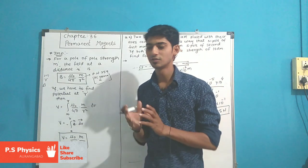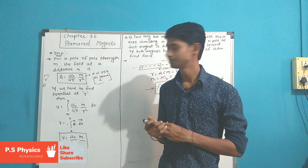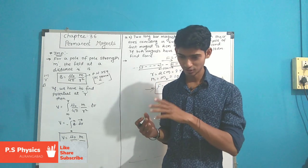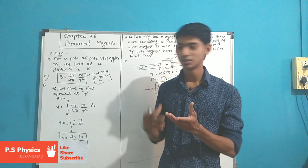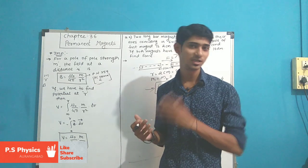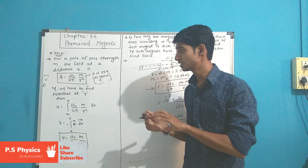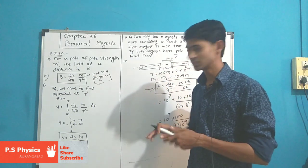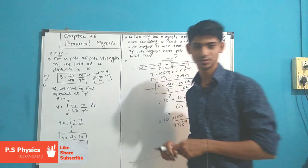Magnetism and electrostatics are not different — they are interrelated, which is why we call it electromagnetism. In electrostatics we use electric field; in magnetism we use magnetic field. Electric potential corresponds to magnetic potential, and electric lines of force correspond to magnetic lines of force. The major formulas used in electrostatics appear in permanent magnets as well, with just the notation changed: 1/4πε₀ becomes μ₀/4π.